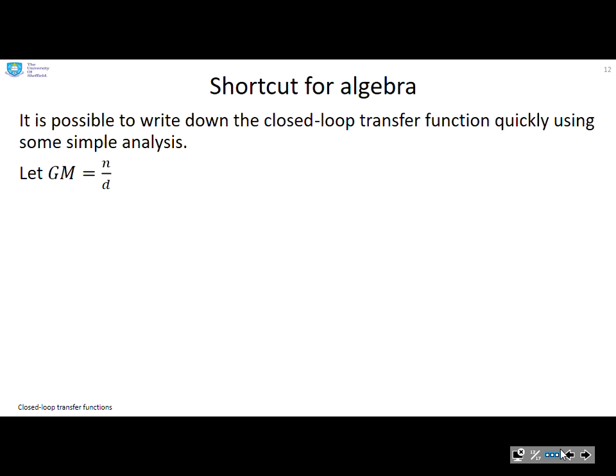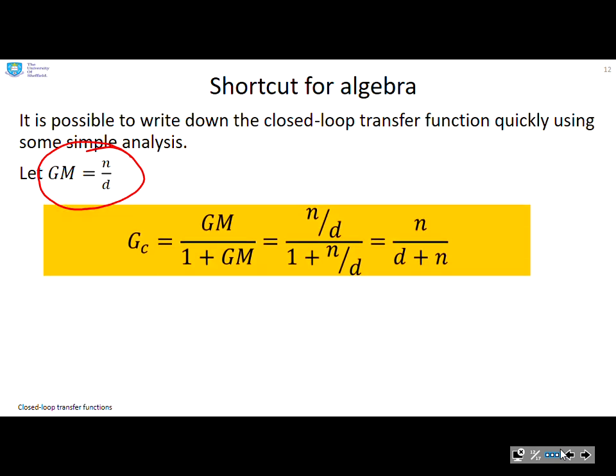Shortcut for algebra. It's possible to write down the closed loop transfer function quickly using some simple analysis. So if I assume that g is given by n over d, then you can see what I can do. There's my closed loop transfer function, gm over 1 plus gm. And then I replace the gm by n over d here and here. And what do you notice? I end up with this nice, neat expression, n over d plus n.